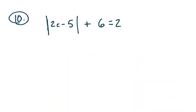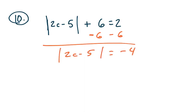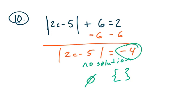More of the same here. If you subtract 6, you get the absolute value of 2C minus 5 equals negative 4. You may want to think about separating them, but that would be incorrect. The answer is no solution — empty set or empty braces. The absolute value cannot equal a negative number. Don't just solve every single problem without thinking; you have to consider what your final answer means.